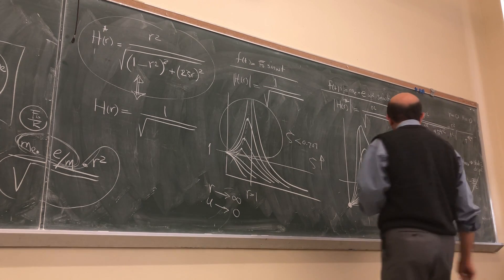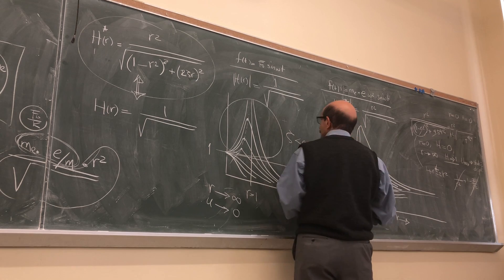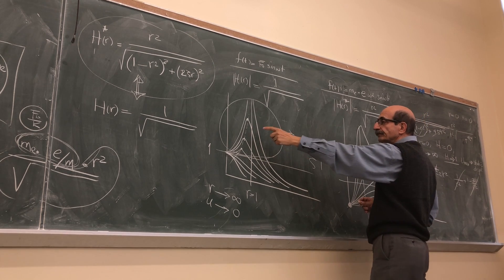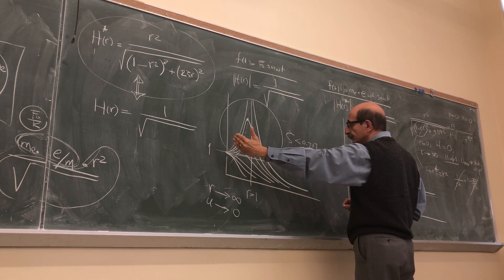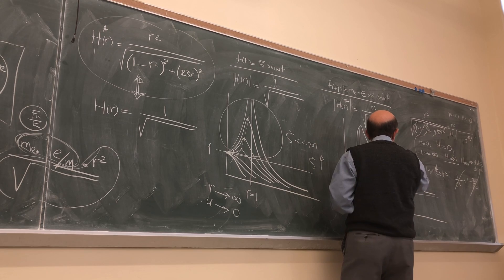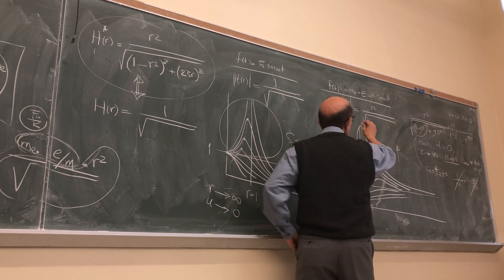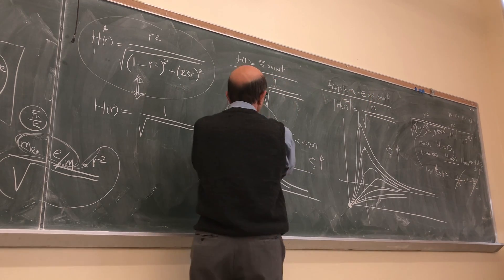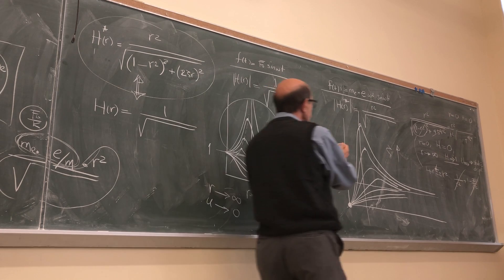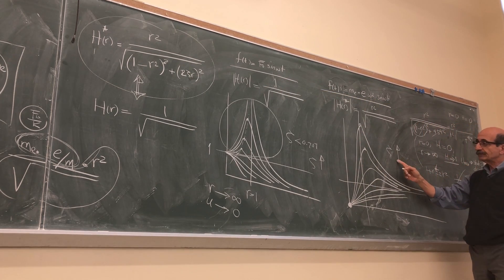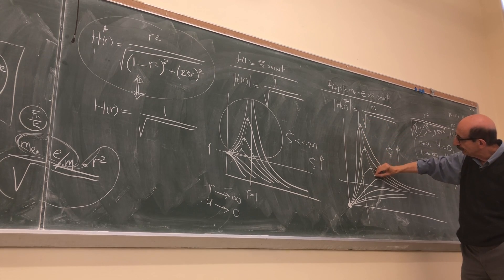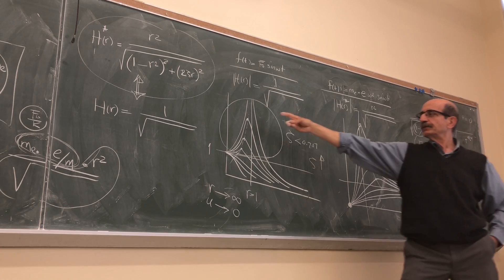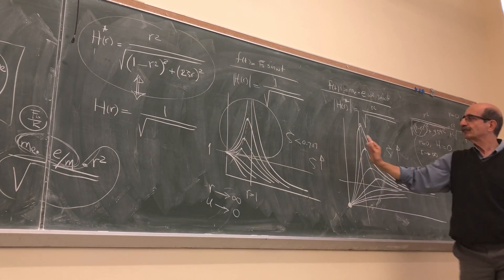Another observation: in the regular harmonic case, as damping increases the peak shifts to the left of r = 1. In the rotating unbalance case, all peak values are to the right of r = 1, and as damping increases the peaks shift further to the right of r = 1. In contrast to the regular case where peaks shift further and further to the left, here they shift further and further to the right.